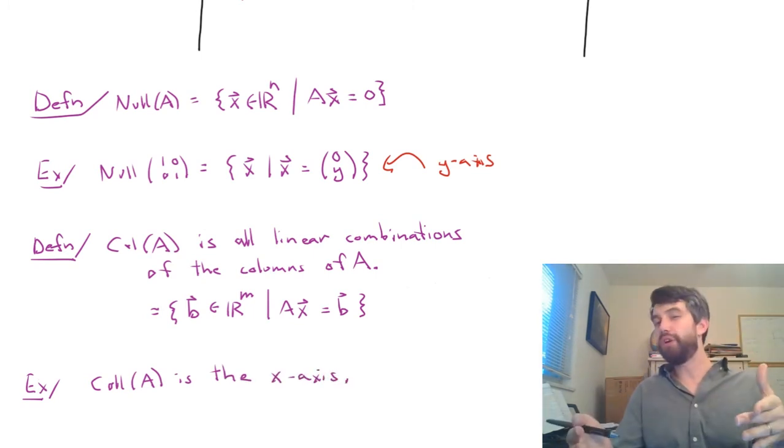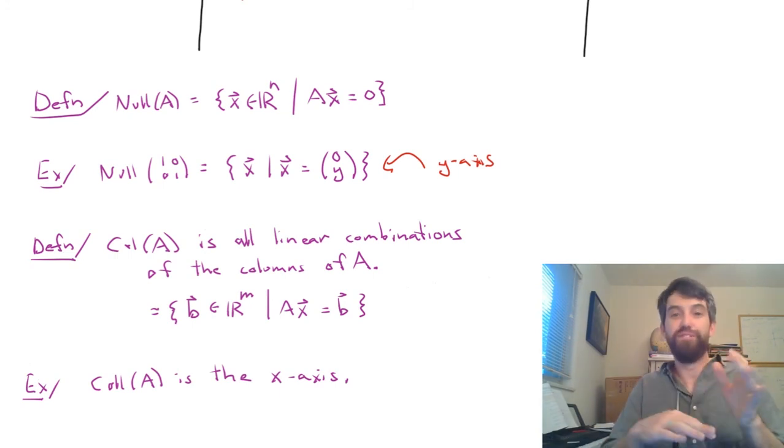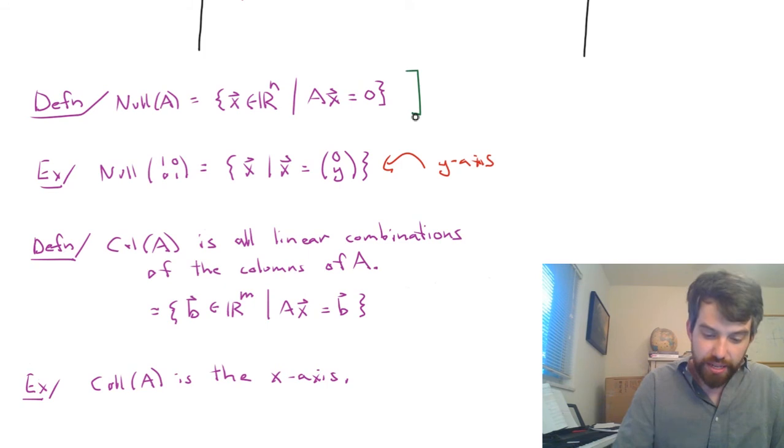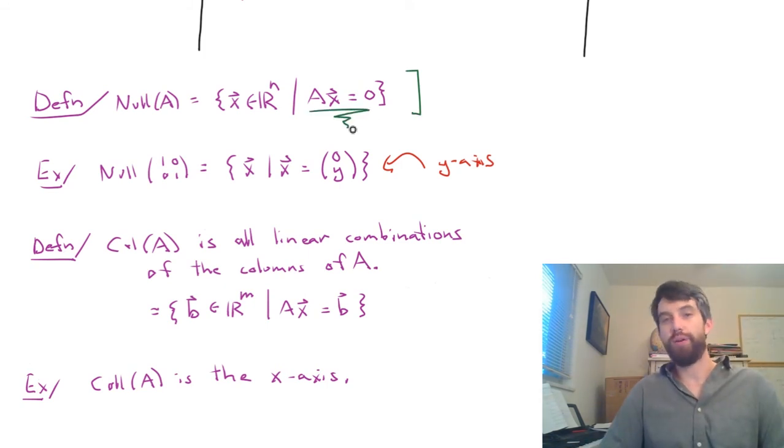Now, I've given a relatively simple and straightforward matrix so that we can just sort of visualize what happens and that's how we figured out what the null space was and what the column space was. But if I give you a longer and more complicated matrix, it's really not that much harder. Indeed, if I focus in on what the null space is, well, this is all about solving all of the X's where A is equal to zero.